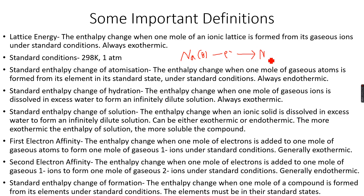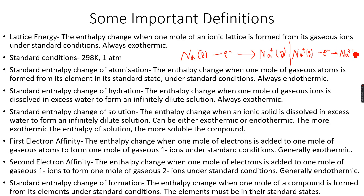Removing electrons gives one mole of Na⁺ gaseous ions. This is the first ionization energy of sodium. If instead we have Na⁺(g), that represents the second ionization energy of sodium, and it keeps going on like this. Electron affinity and ionization energy have exact opposite definitions — their values are not exact opposites, but their definitions are. That's what you need to know.